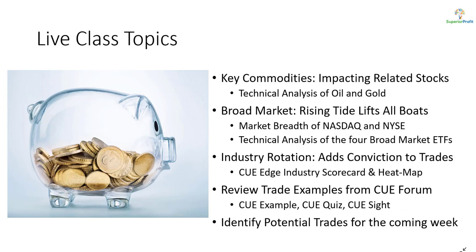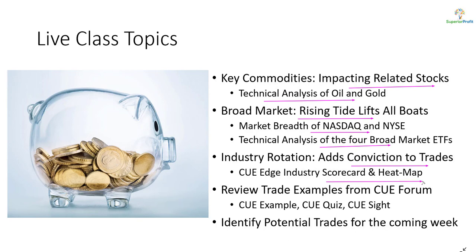In today's topics, we will analyze the commodities oil and gold using technical charts. They tend to impact related stocks. When swing trading stocks, we like to align the trades with the market's direction. We will study market direction using NASDAQ and NYSE market breadth and technical analysis of market ETFs. We will also study industry strength using scorecard and heatmap. Along the way, we may review some recent trade ideas shared in our traders forum, which is open to the public. We will also look for potential trades for the coming week.